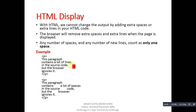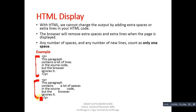Another important property is HTML display behavior. With HTML, you cannot change the output by adding extra spaces or extra lines inside your HTML tags. The browser will remove extra spaces and extra lines when the page is displayed — any number of spaces or new lines counts as only one space. So if we write the content differently inside a P tag, the output will be the same.